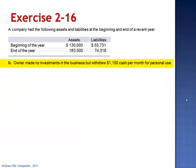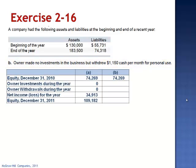Company B: the owner made no investments in the business, but withdrew $1,150 in cash per month for personal use. Beginning equity is $74,269, zero in investments, withdrawals of $1,150 per month multiplied by 12 months equals total withdrawals of $13,800, and the ending equity is again $109,182.